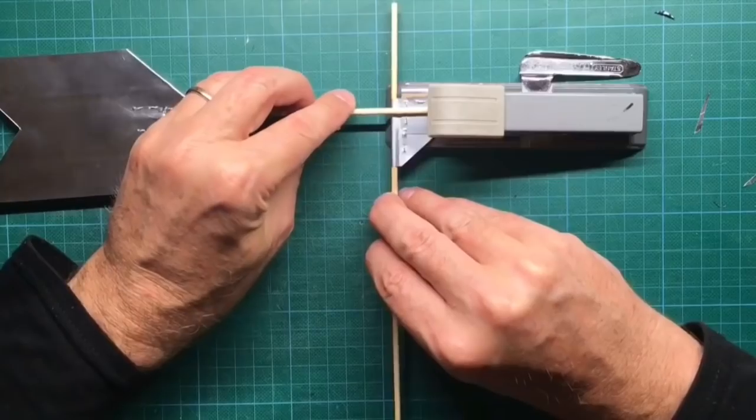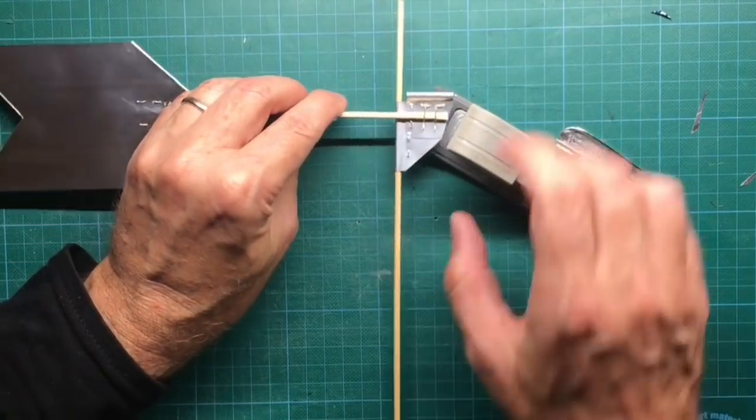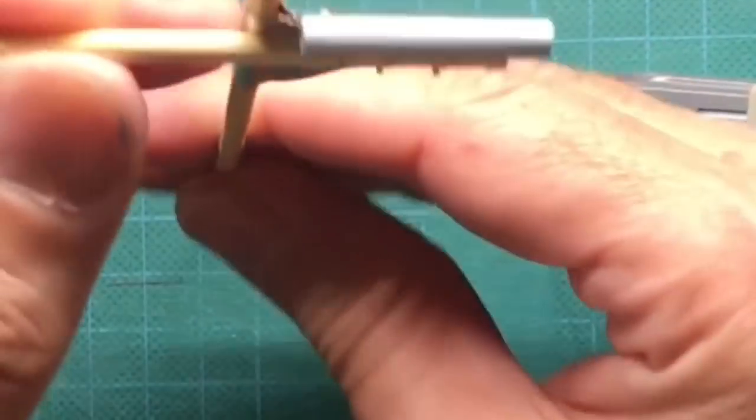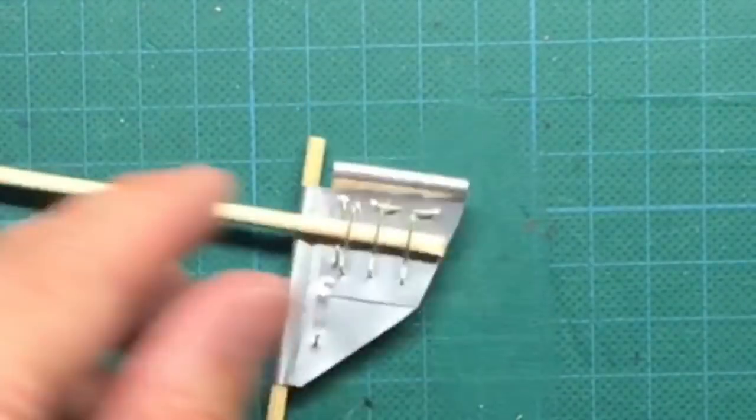Now let's combine the fin and the T-connector. Place the end of the grill stick from the fin over the T-connector and fix it with a stapler. Again, you can tighten the staples with pliers.